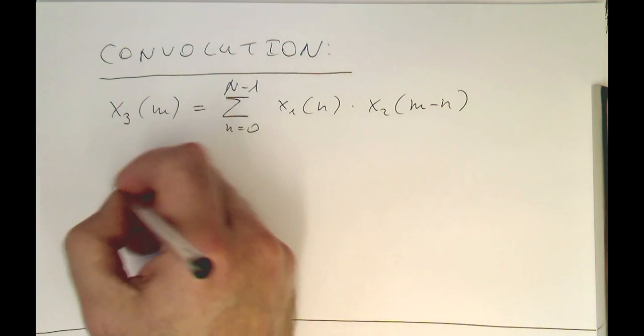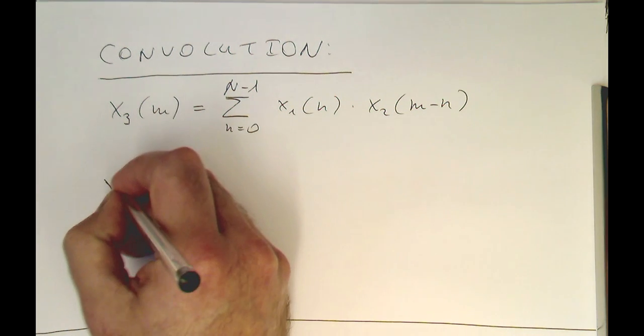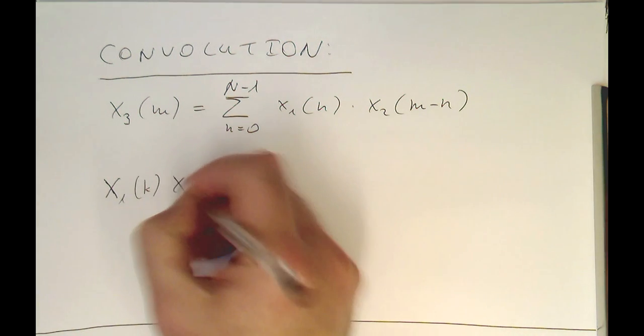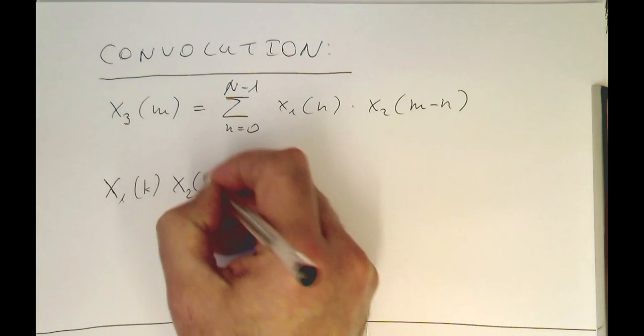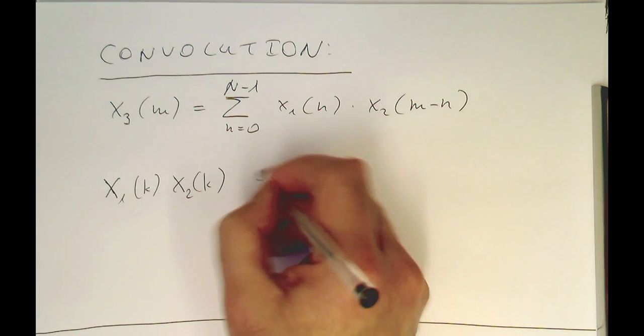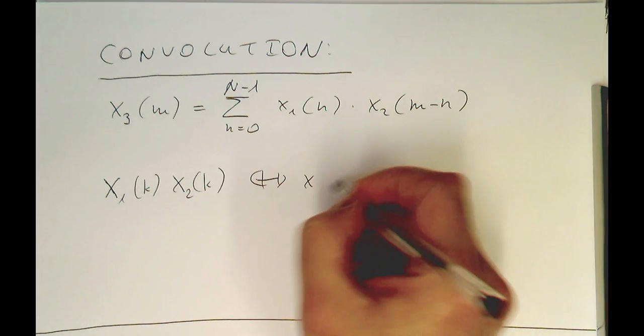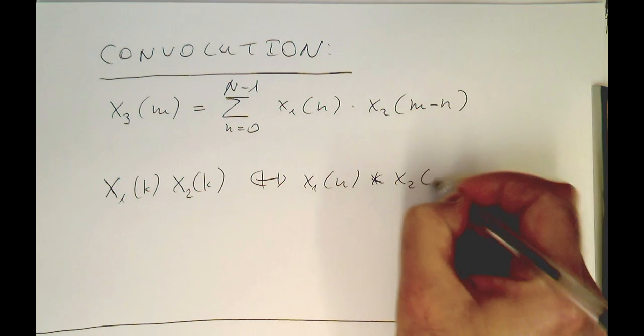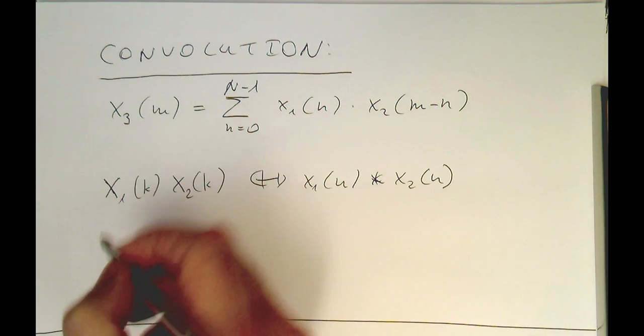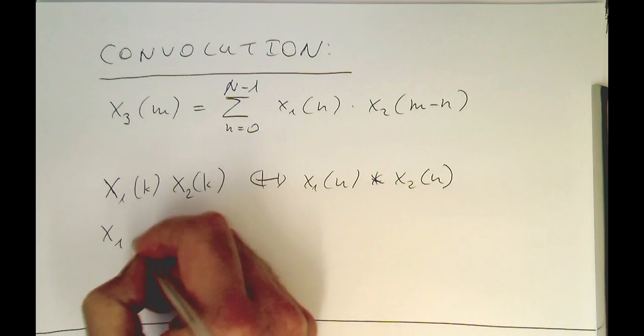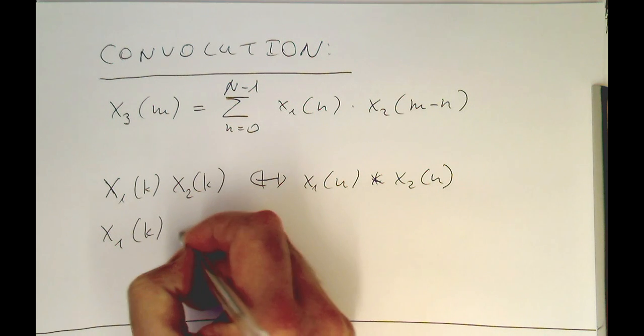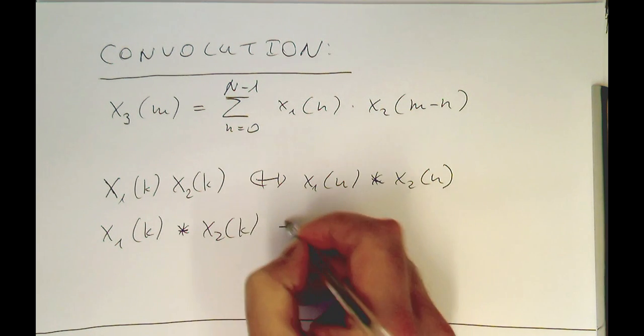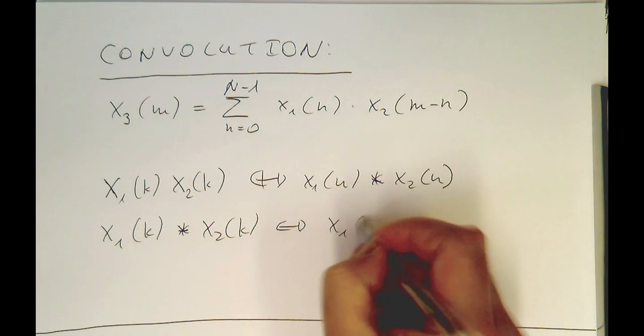Convolution - if we have a sequence x1 to a Fourier transform x2 of k, then in the time domain, x1 of n is convolved with x2 of n. The opposite also applies. If we have a convolution between x1 of k and x2 of k, then in the time domain, this is a multiplication.